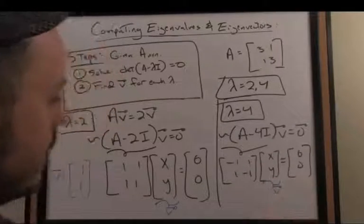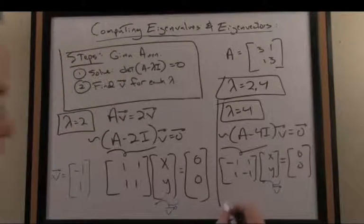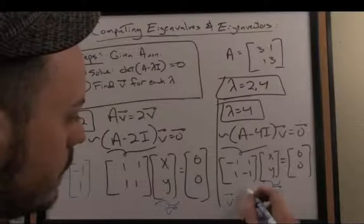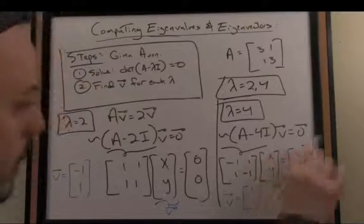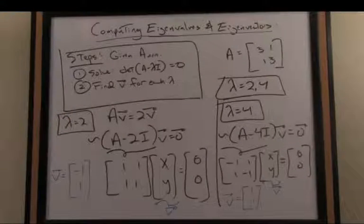And once again, we'll just make this as simple as possible. By inspection, you'll notice if I set v equal to the vector 1, 1, negative 1, 1 dotted with 1, 1 equals 0 in both cases.